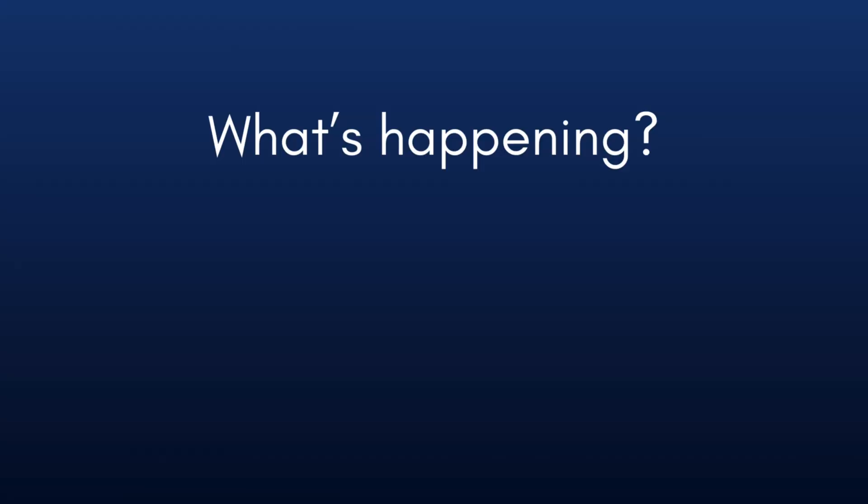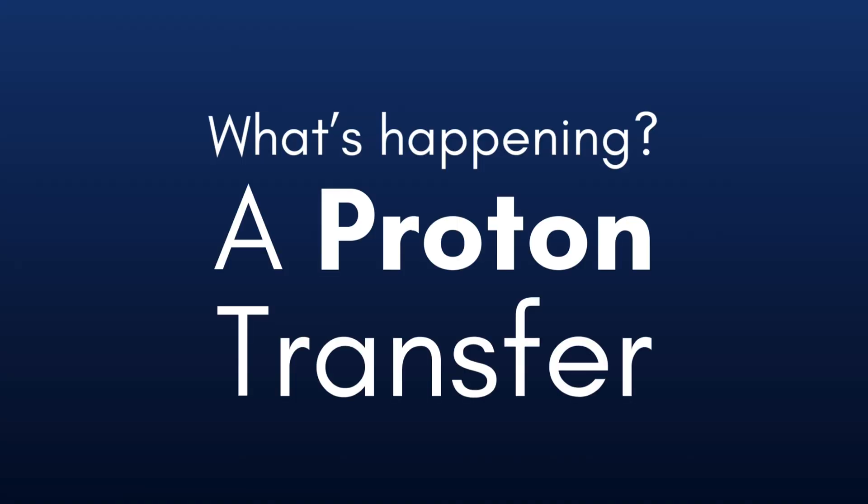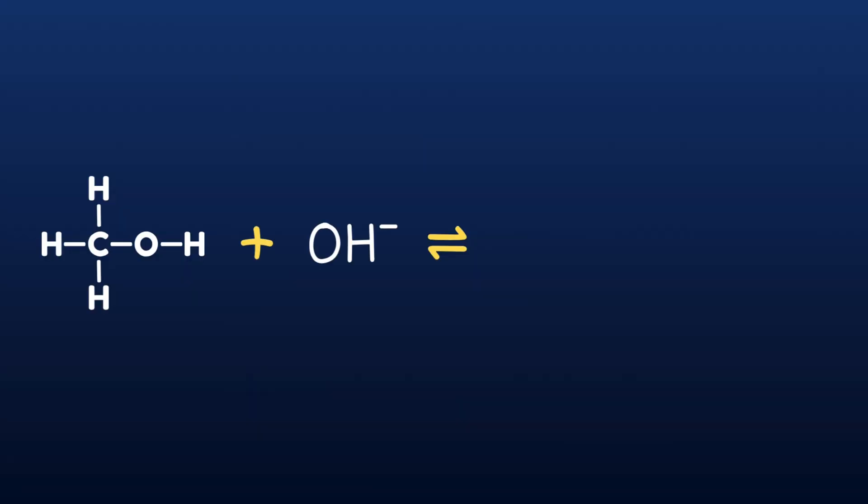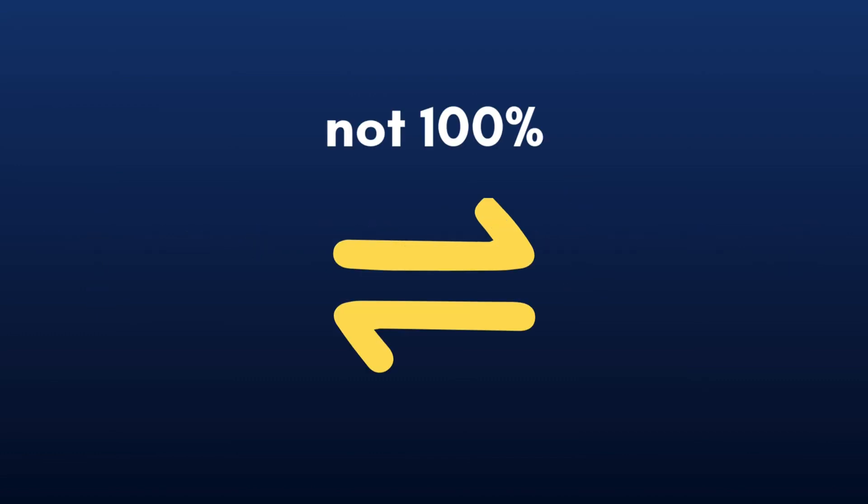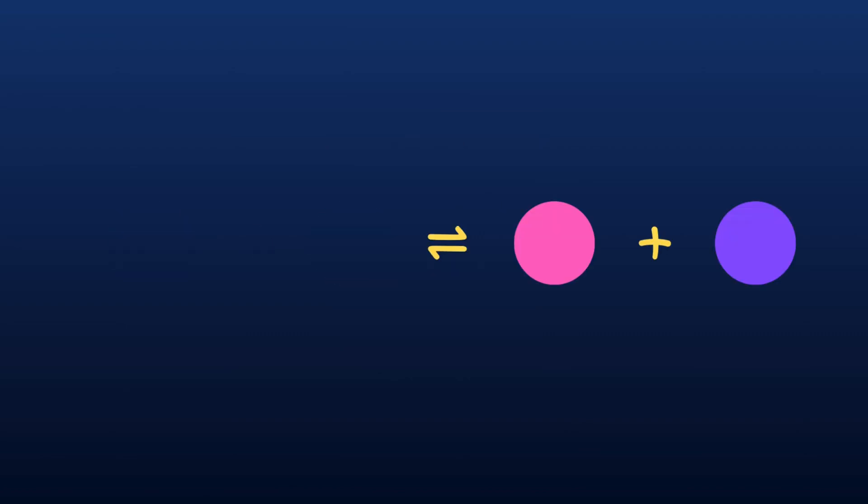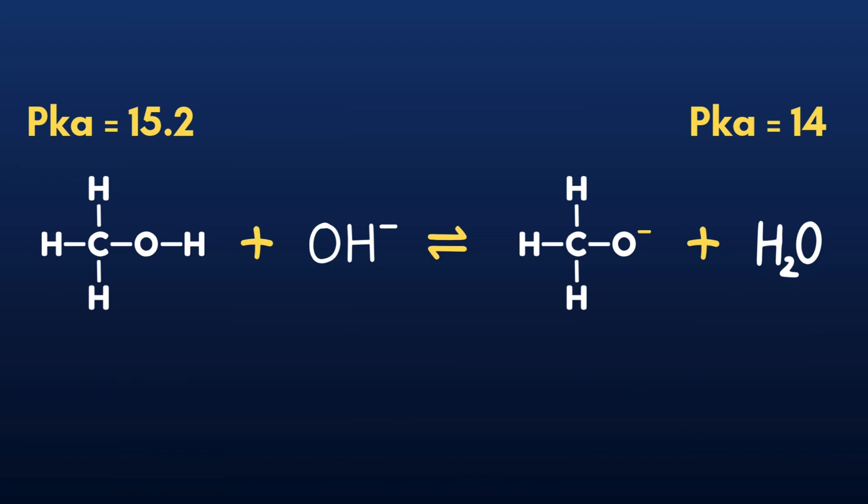So basically, this is the equation of what's happening right now. Essentially, it's a proton transfer. If you're new to chem, think of it as basic math. Methanol plus hydroxide equals methoxide plus water. Although the equal sign isn't 100%, like this transformation doesn't happen completely. Not all of the reactions are converted into products. Looking at the acidity of the two tells us that only around 6% of the hydroxide turns into methoxide.